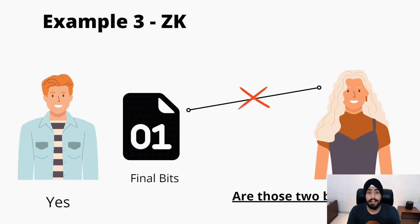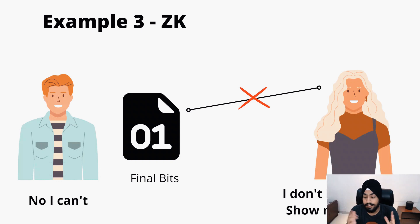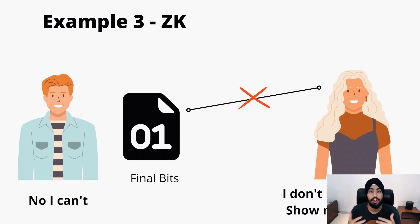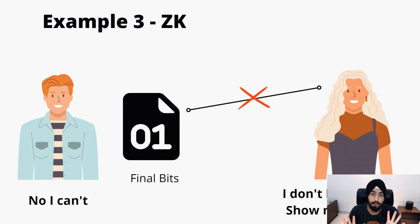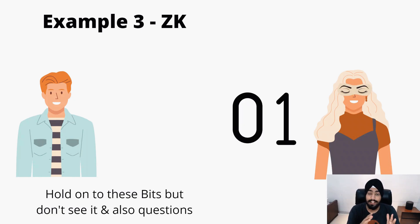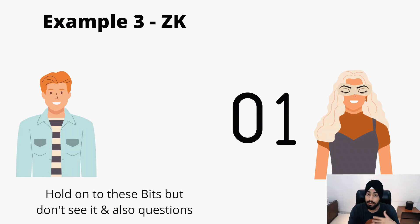Person B asks whether those two bits are different. Person A says yes, they are different. Person B doesn't believe it and says person A is faking it. Person A insists he is telling the truth. Person B says to show the bits, but person A says he cannot show the actual bits — however, he will prove that they are different. Person A is the prover and person B is the verifier; he will prove the bits are different without revealing the actual bits.